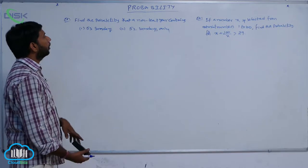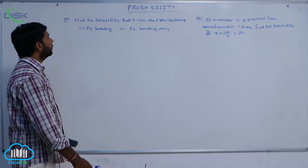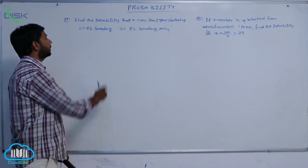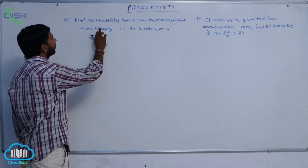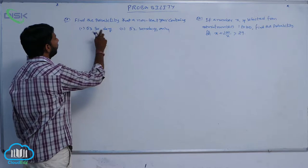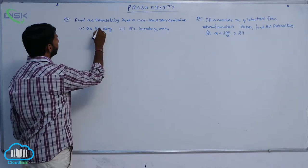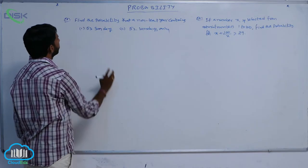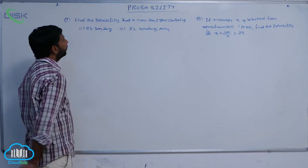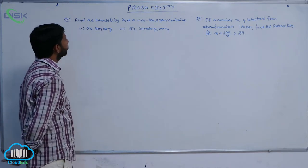Find the probability that a non-leap year contains 53 Sundays. There are two parts: the probability that a non-leap year contains 53 Sundays, and the probability that it contains 52 Sundays only.